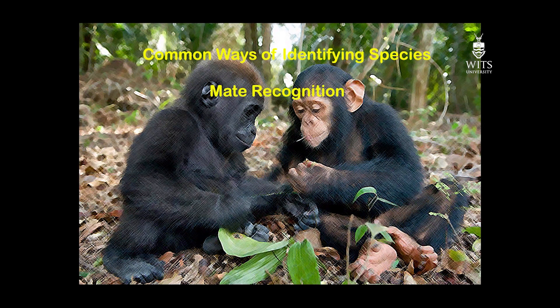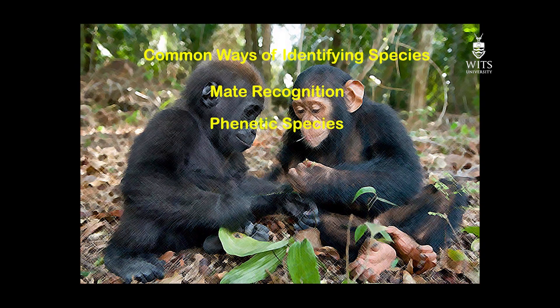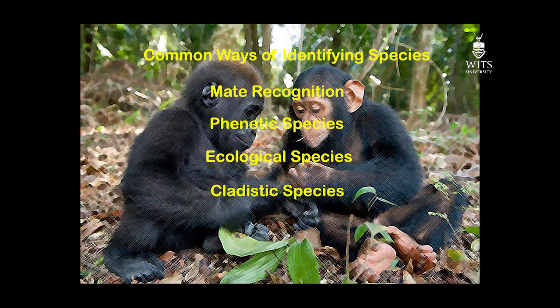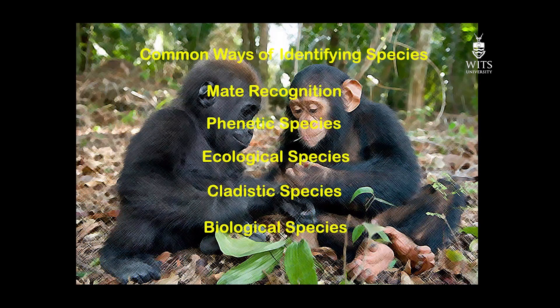The first is mate recognition, where an individual recognizes another as a potential viable mate, which is, of course, difficult to test in the vertebrate fossil record. Then there's a phonetic definition, whereby we use statistics to compare one set of the remains of organisms with another, looking at similarities and differences. There's also an ecological definition, where we use how an organism is adapted to a specific niche. There's also a cladistic definition, where a species is a lineage of populations between two phylogenetic branch points. And finally, there's a biological definition, where we recognize a species when it can actually or potentially breed in nature, producing viable offspring.